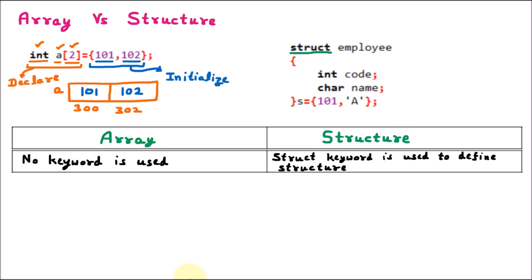After that, we provide the name of the structure which is 'employee'. Then we have the curly bracket start to curly bracket end — this is the body of the structure. Inside the body we define two different data types: the first variable is 'code' of integer type, and the second is 'name' of character type. This is called the definition of the structure.